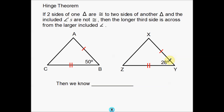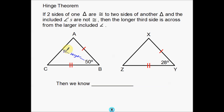They are not congruent so they're not the same — obviously you can see that 50 degrees and 28 degrees are a little bit different. Now last part: then the longer third side is across from the larger included angle. You might be able to already see this. Here's 50 degrees, here's 28 degrees, and 50 degrees is the larger angle.